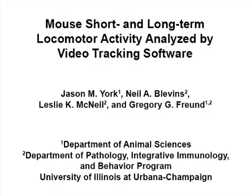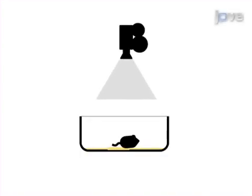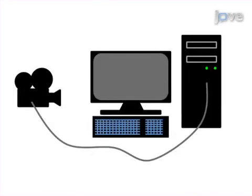The overall goal of the following experiment is to detect differences in short and/or long-term locomotor activity between different groups of experimentally treated mice. This is achieved by video recording mouse home cage activity in real time. As a second step, the animal's locomotor activity is analyzed in real time or from a recording using video tracking software.